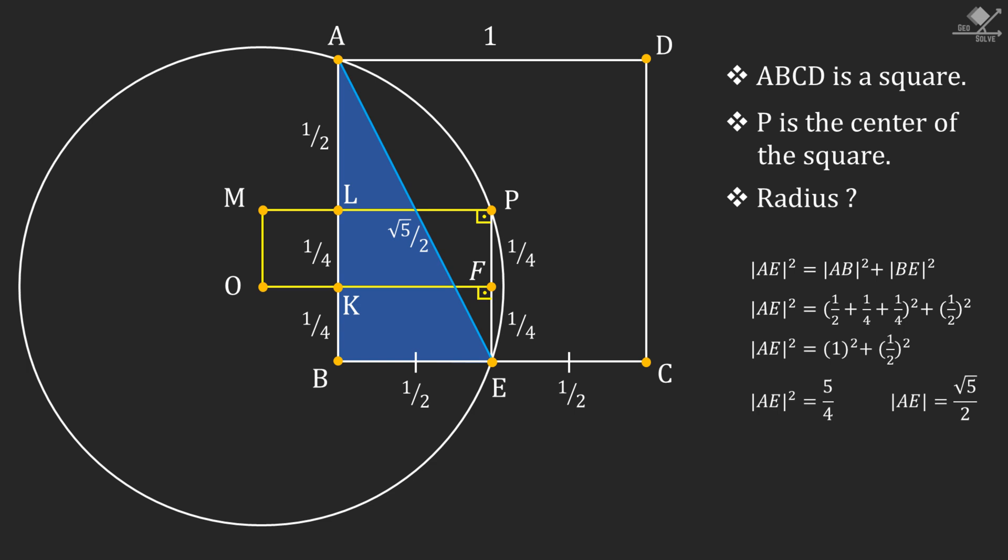Now let's extend chord AB as follows and call the intersection point with the circle as A'. Line segment BA' will also be 1/2 units using symmetry. Then let's connect point A' and point E.